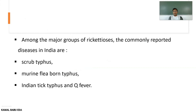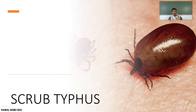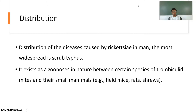Among the major groups of rickettsia, the most commonly reported diseases in India are Scrub Typhus, Murine flea-borne Typhus, Indian Tick Typhus, and Q Fever. Now we will discuss Scrub Typhus in detail.